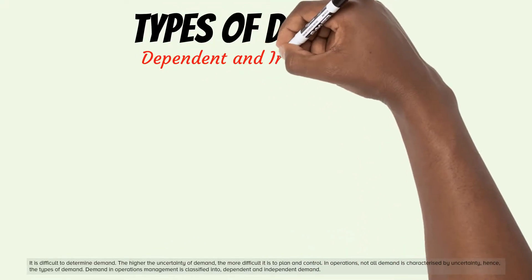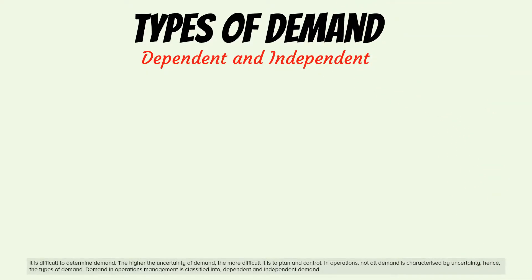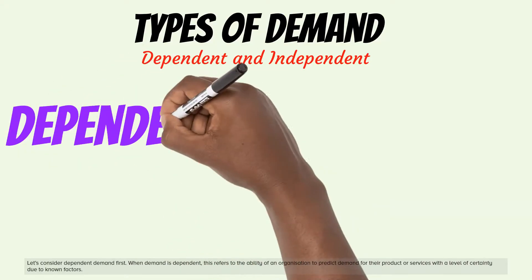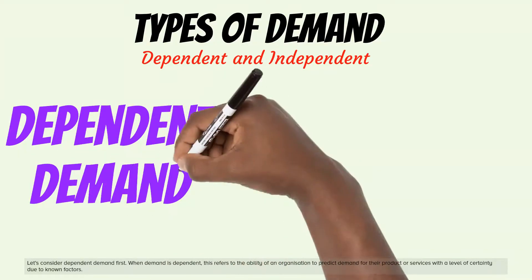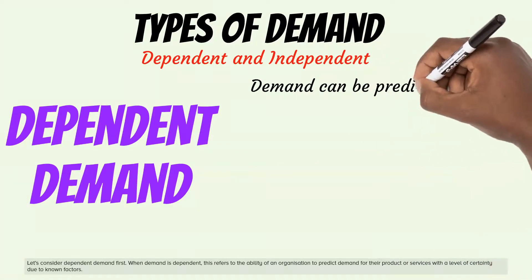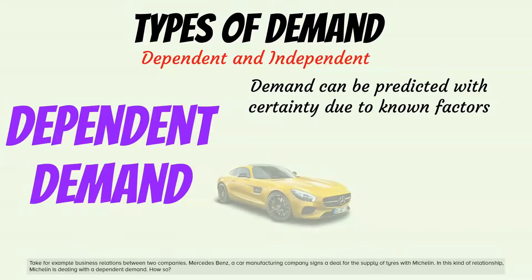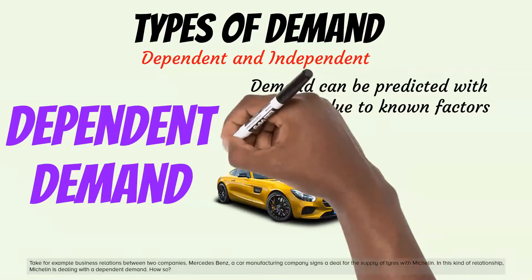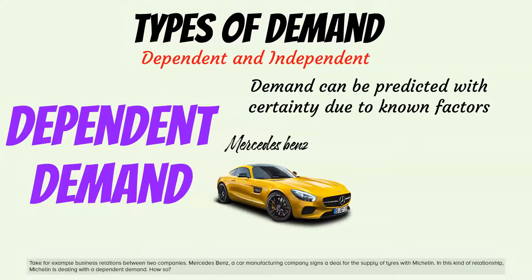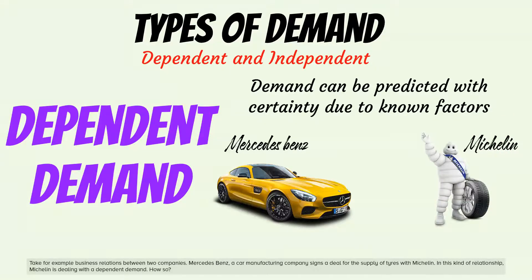Demand in operations management is classified into dependent and independent demand. Let's consider dependent demand first. When demand is dependent, this refers to the ability of an organization to predict demand for their products or services with a level of certainty due to known factors. Take for example business relations between two companies: Mercedes-Benz, a car manufacturing company, signs a deal for the supply of tires with Michelin. In this kind of relationship, Michelin is dealing with a dependent demand.